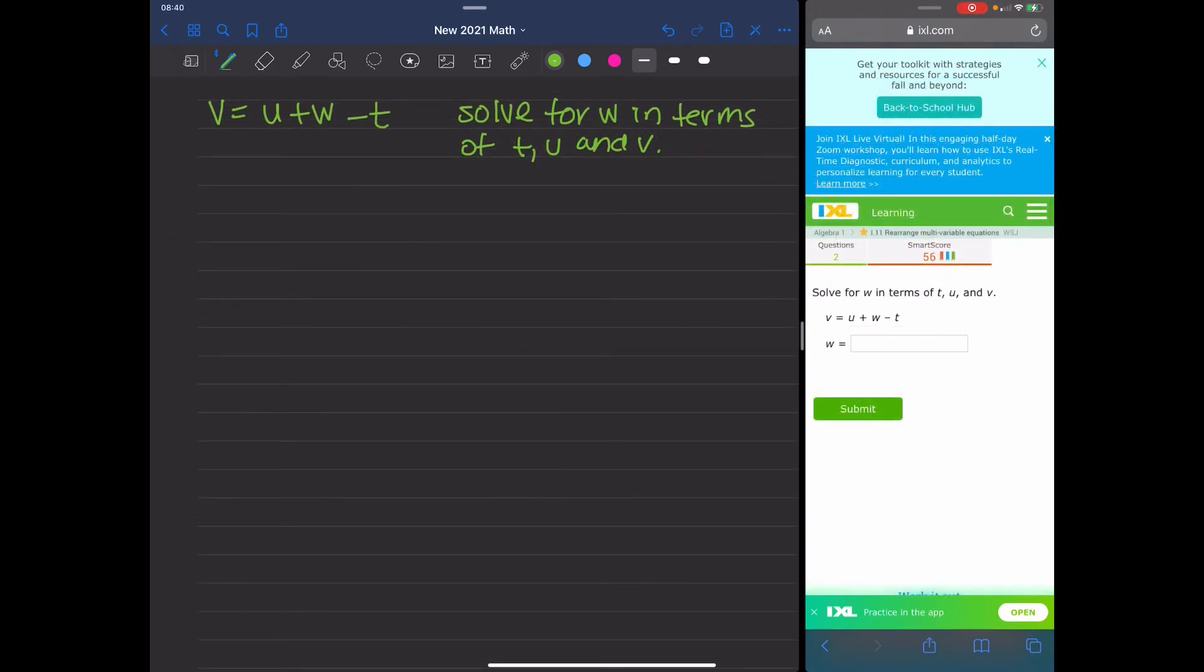Okay, so for this write cell, it says V equals U plus W minus T. So you're going to solve for W in terms of T, U, and V. So that means we want W on its own side. So W is going to be by itself. So we need to find some way to move the U and the T over to the left and get W to stay on one side. So the first thing you need to do is think about adding and subtracting. So I want to start with the U. So I'm going to subtract U from both sides.